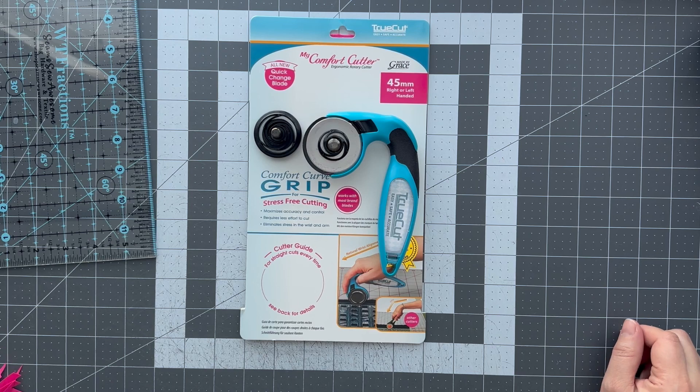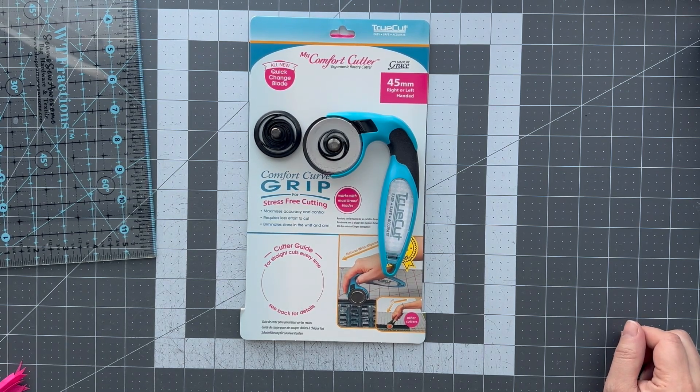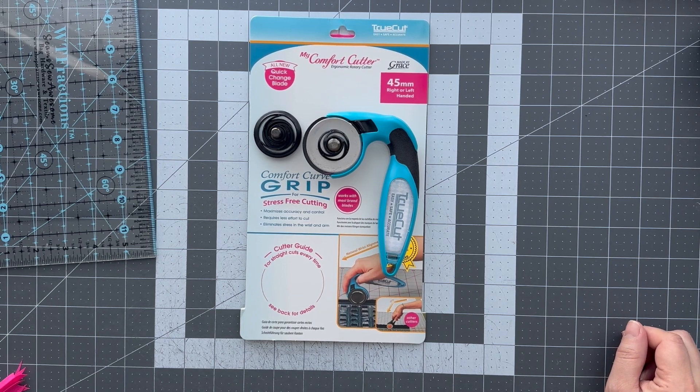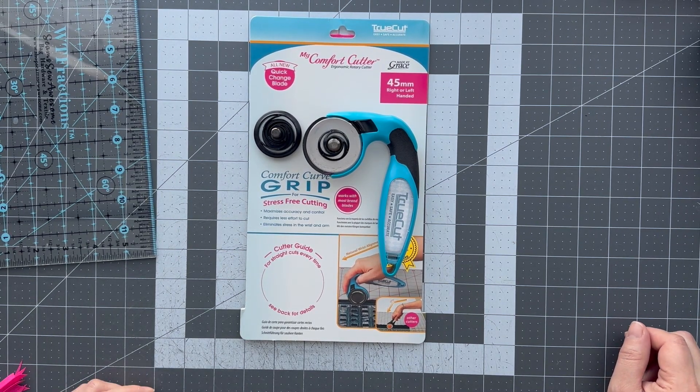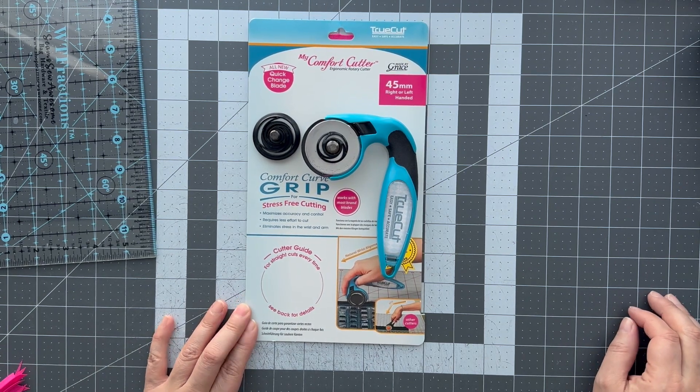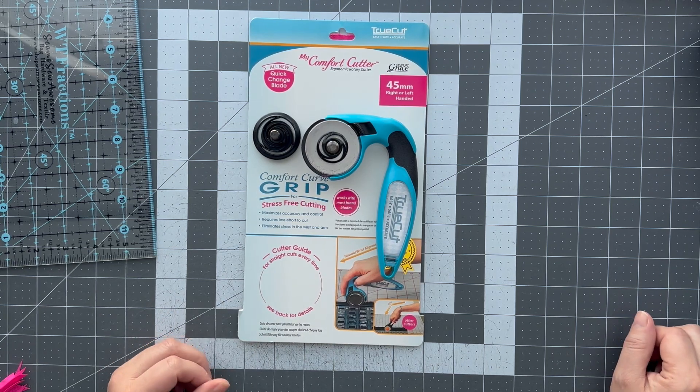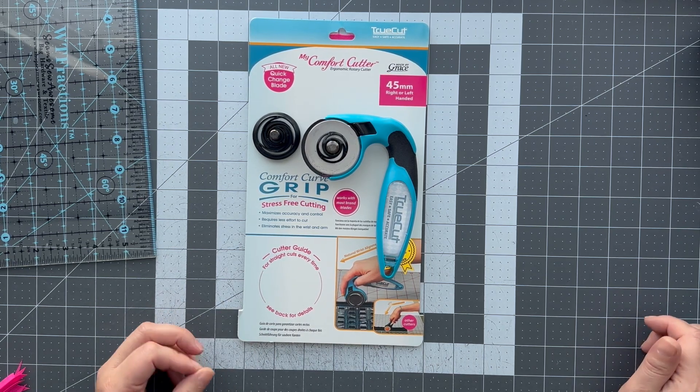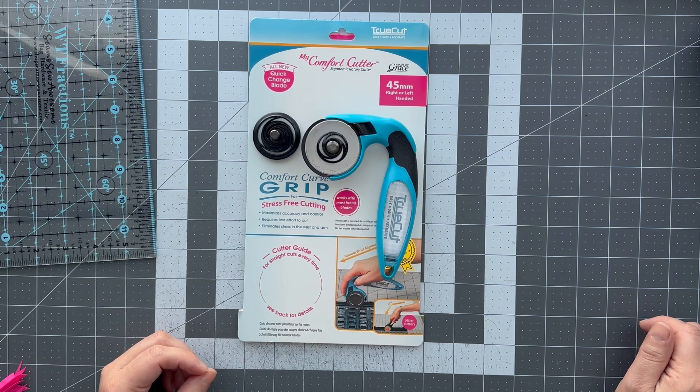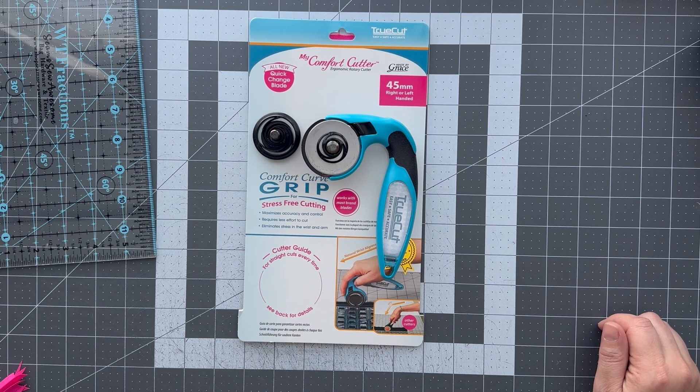I just got it today so I'm just kind of playing around with it. I cut a lot of waterproof canvas, a lot of cotton woven, especially cotton woven interfaced, and a lot of vinyl, different thicknesses of vinyl, probably up to like marine vinyl. So I will let you know how it does with those materials as well.